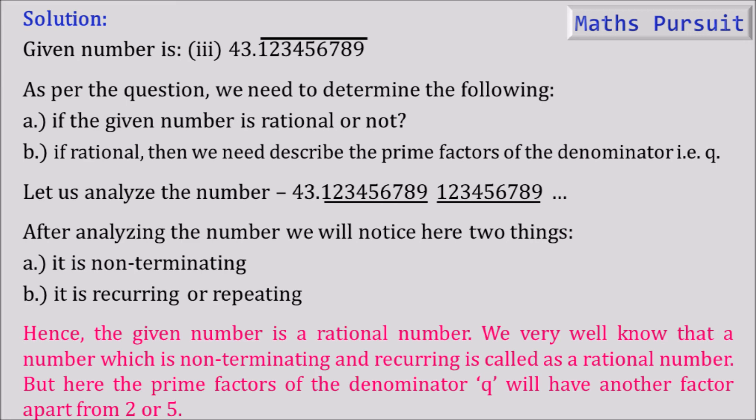But here the prime factors of the denominator Q will have another factor apart from 2 or 5. From the theorems we very well learnt that if a rational number is terminating, then definitely the prime factors of Q will be of the form 2 to the power n and 5 to the power m. And if it is non-terminating and repeating, then definitely apart from 2 or 5 we will be having some other number. So for that reason we could clearly say that as it is repeating and non-terminating, it is a rational number but definitely it is not of the form 2 or 5. It is having another number apart from 2 or 5.